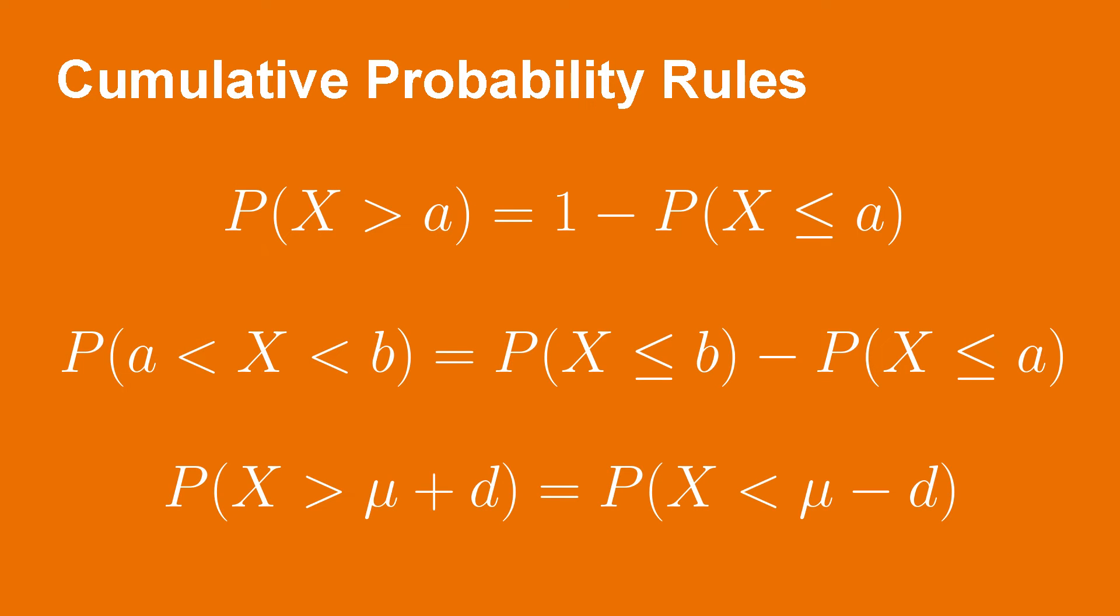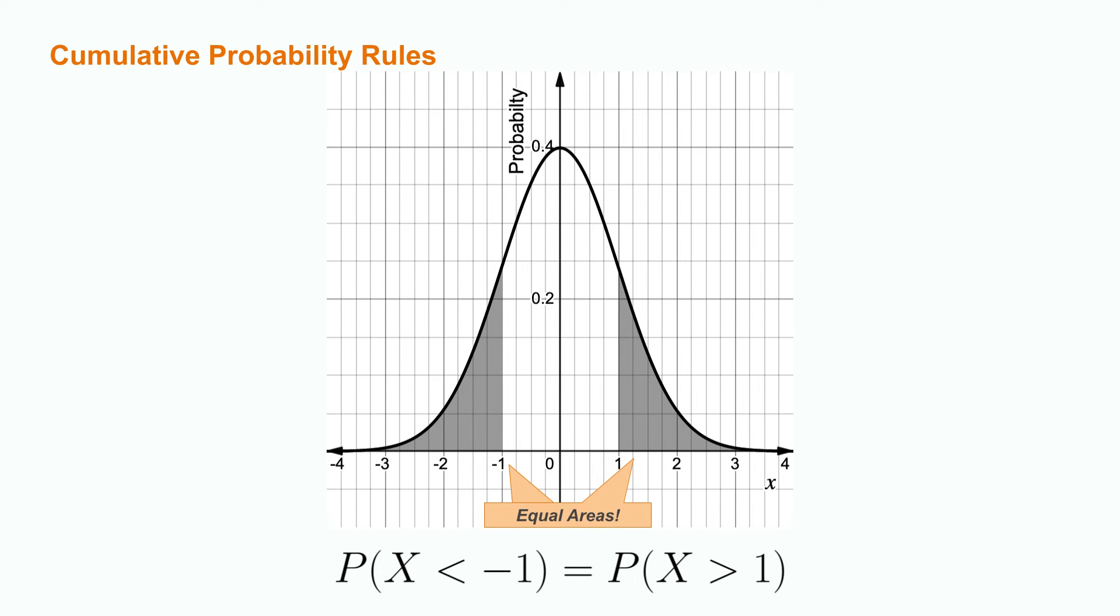Finally, the third rule states that the probability of some outcome that is more than d units to the right of the mean is equal to the probability of seeing some event that is less than d units to the left of the mean. For example, the probability of some observation being less than negative 1 is the same as the probability of it being greater than positive 1.